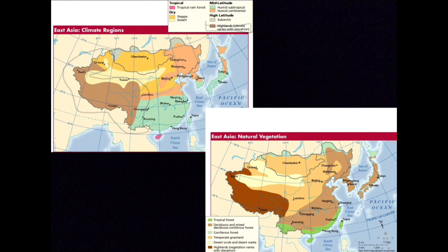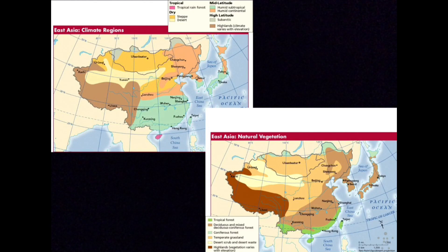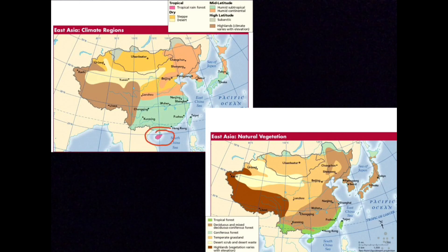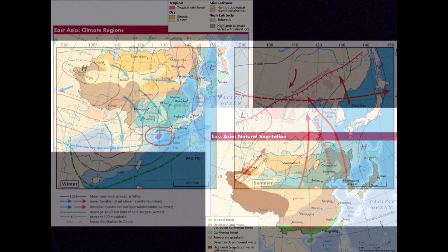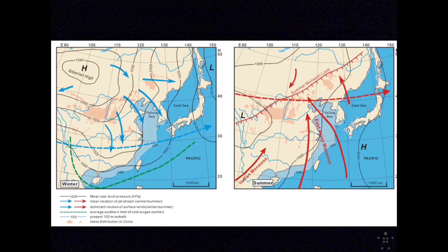Last but not least, there's a tropical rainforest climate zone on the southern island of Hainan off China's southern coast. Year-round they have high temperatures, it's very rainy during the summer monsoon, and you have a tropical forest-type climate.